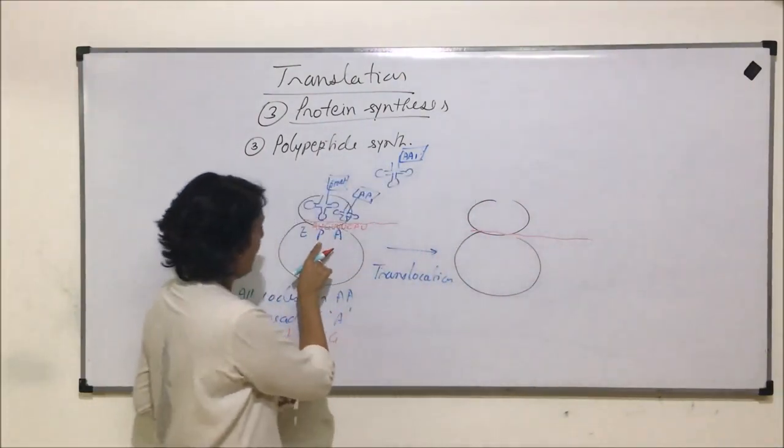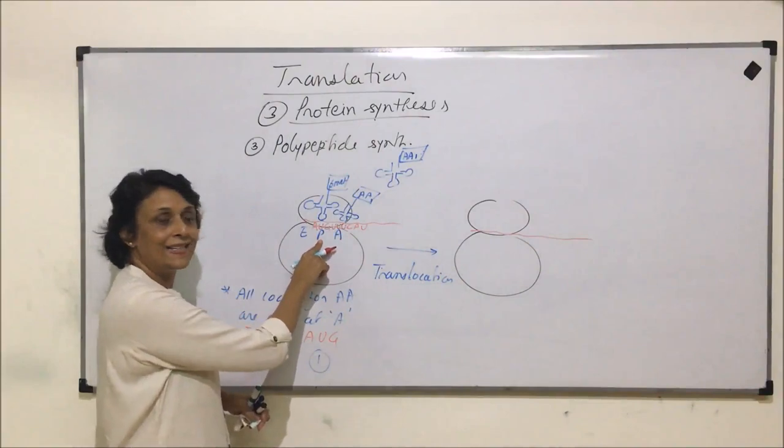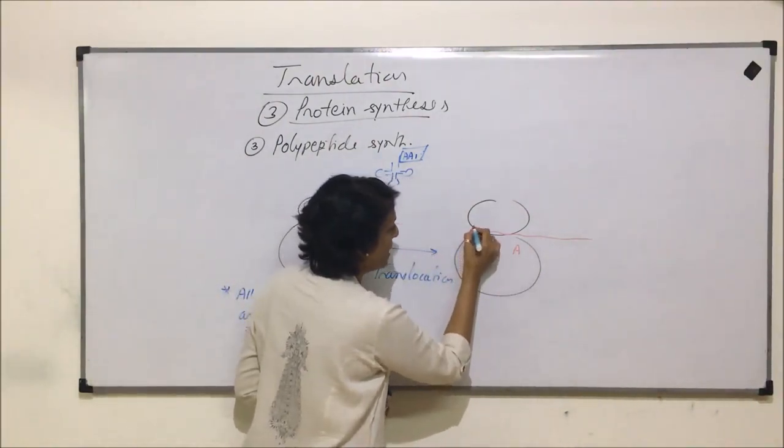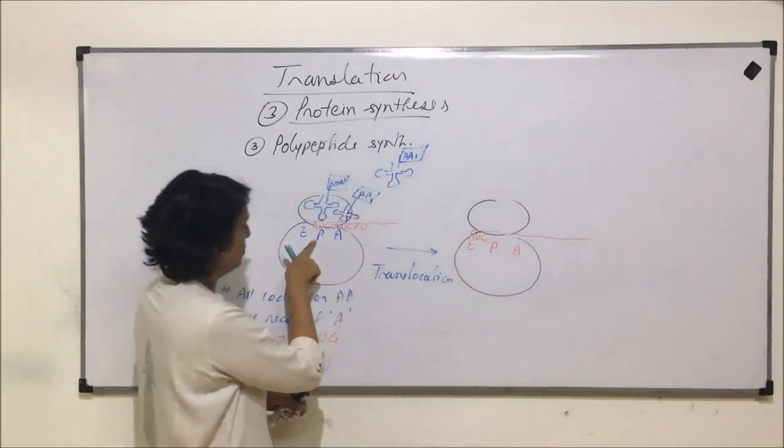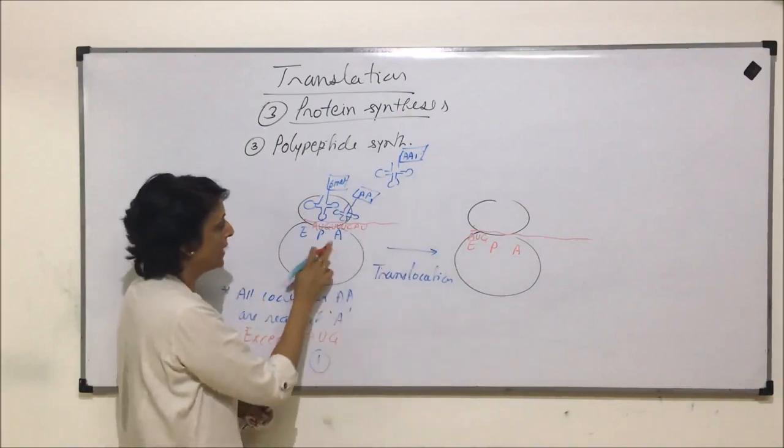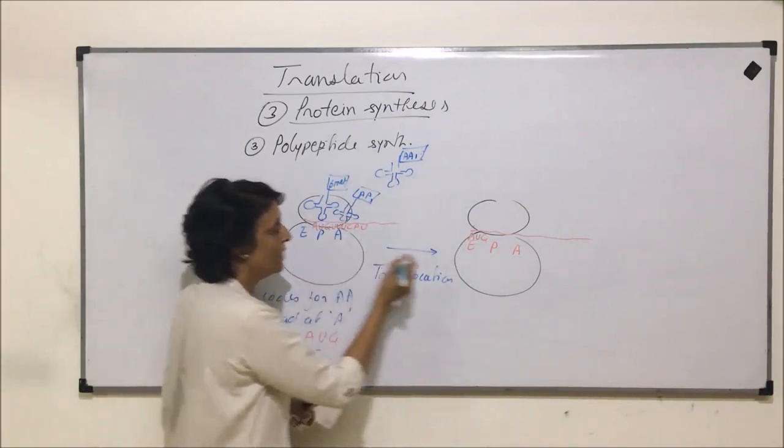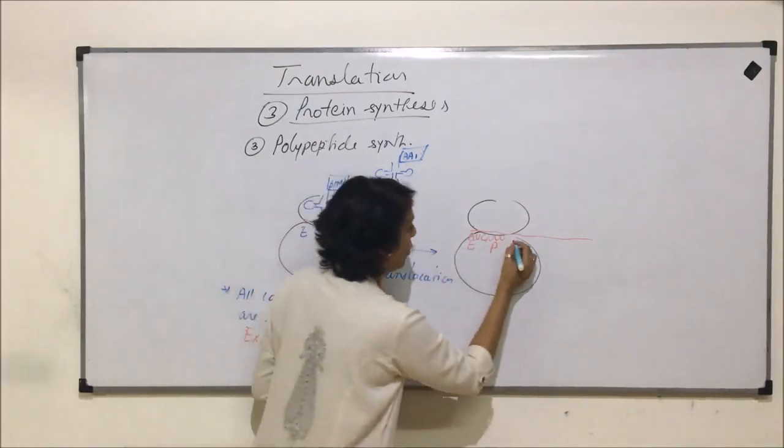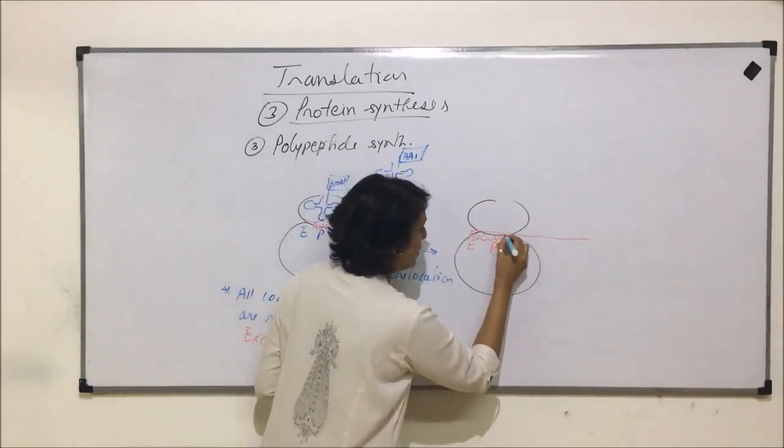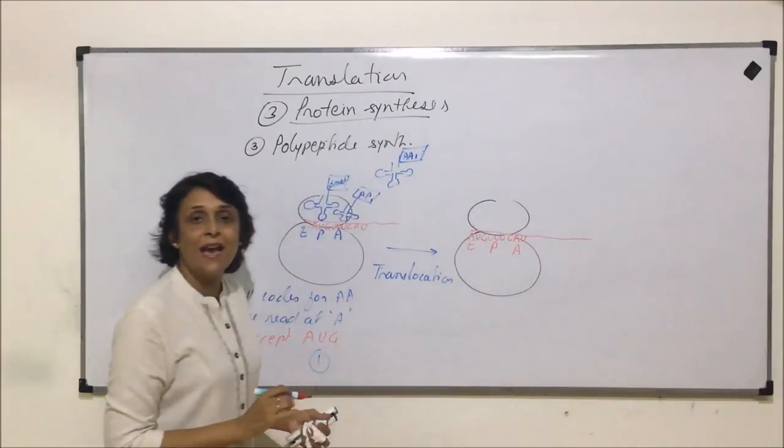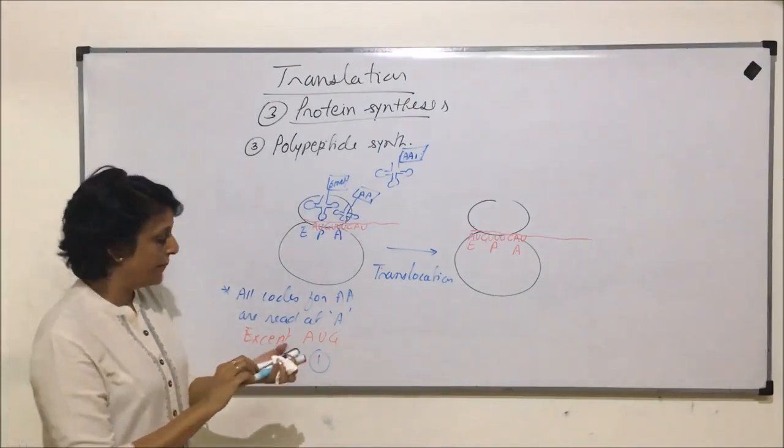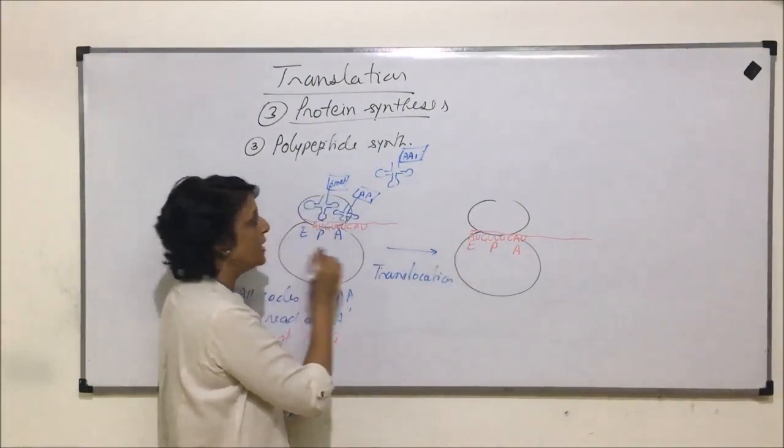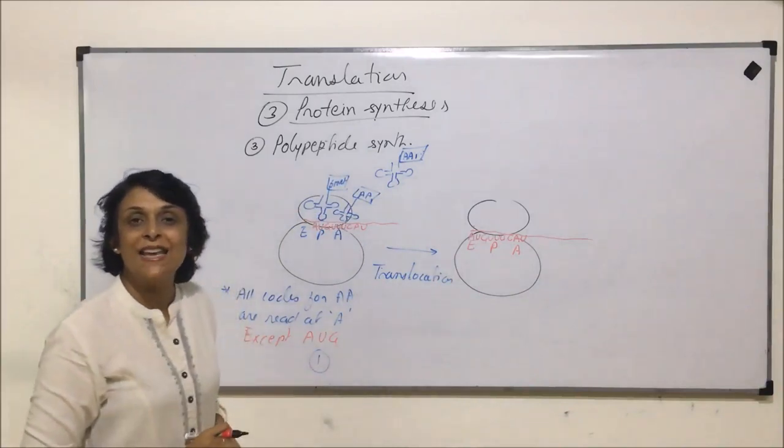The mRNA is here. AUG in the first case was at site P. This is E, this is P, this is A. So AUG now comes to site E because this ribosome has shifted. The code which was at A will now be at site P and site A will have a new code. In this case, we wrote CAU. So what comes at site A is a new code. At E site, now it is AUG. And we said E is the site which is known as exit site. From here, the tRNAs are going to leave.